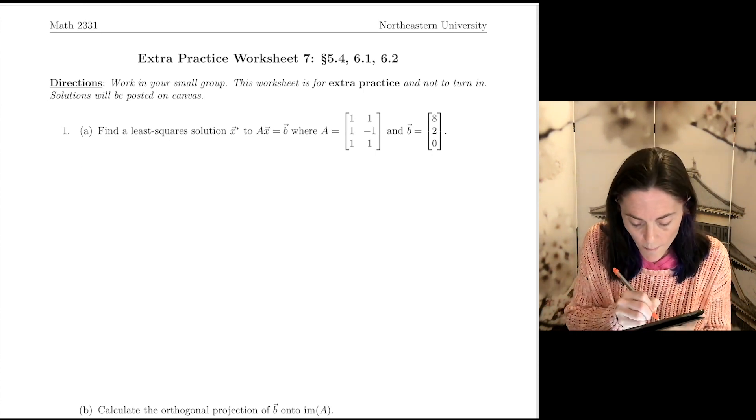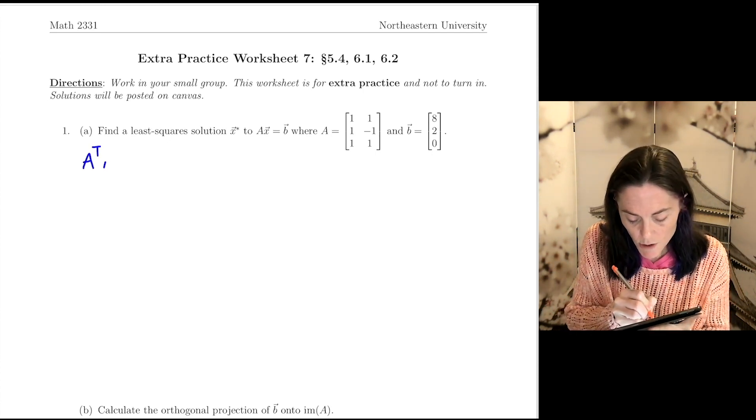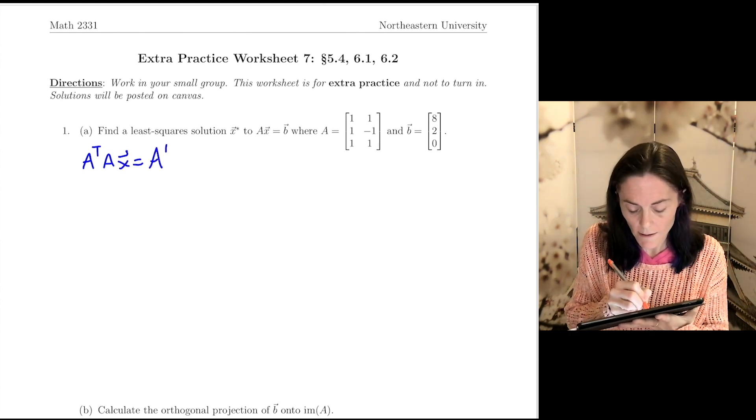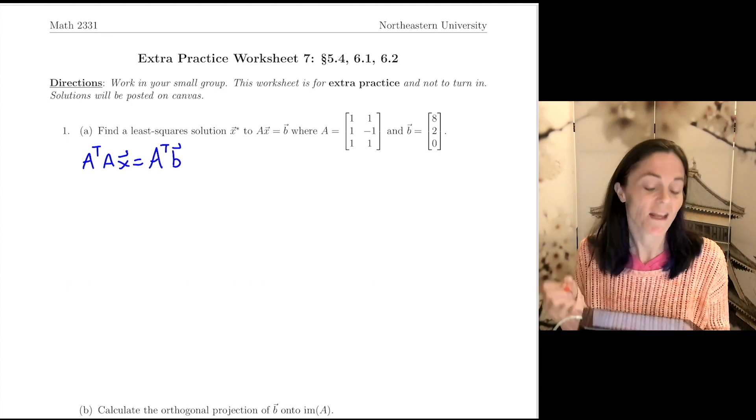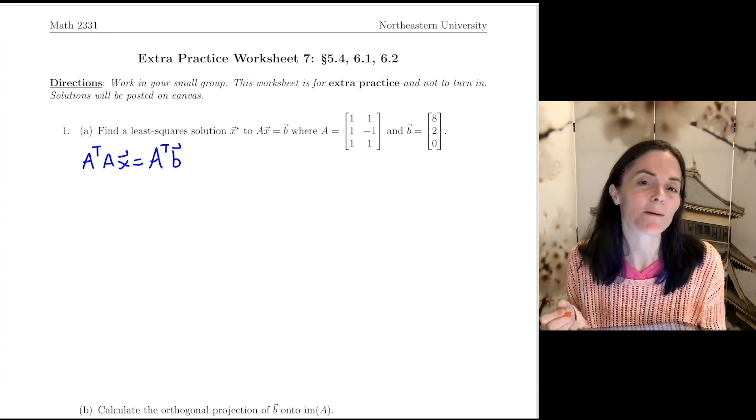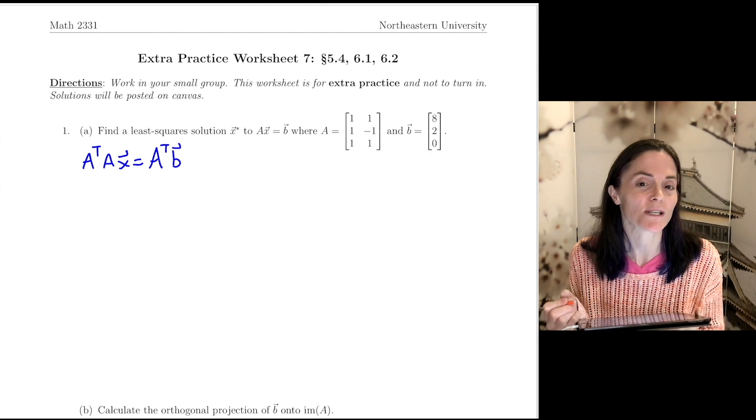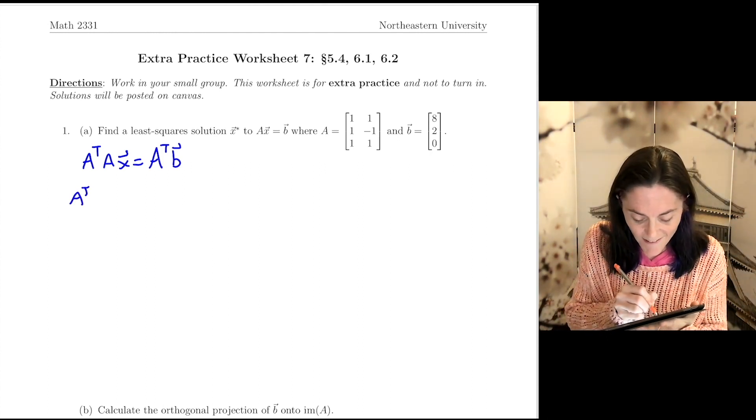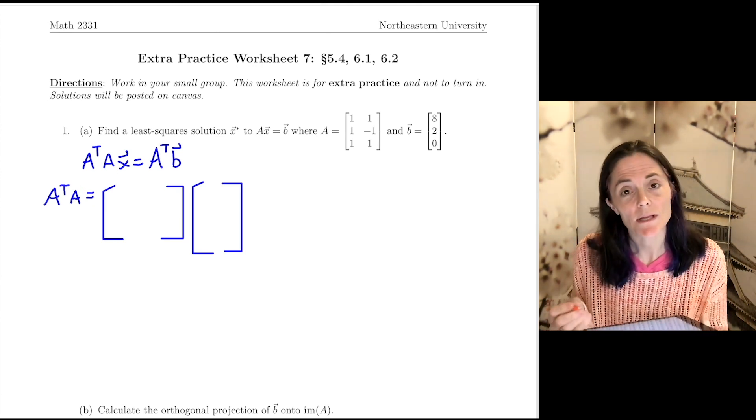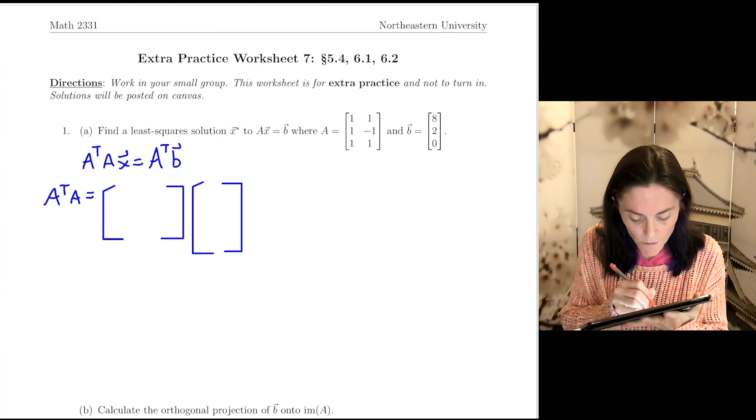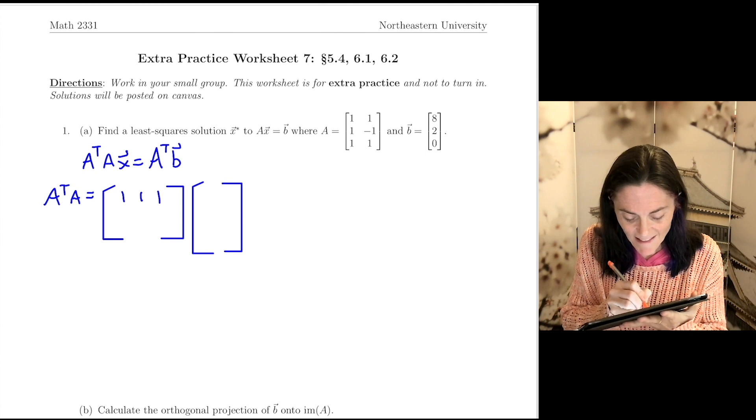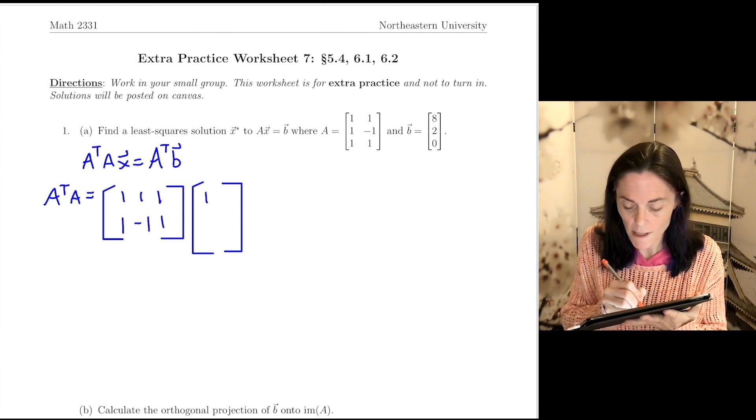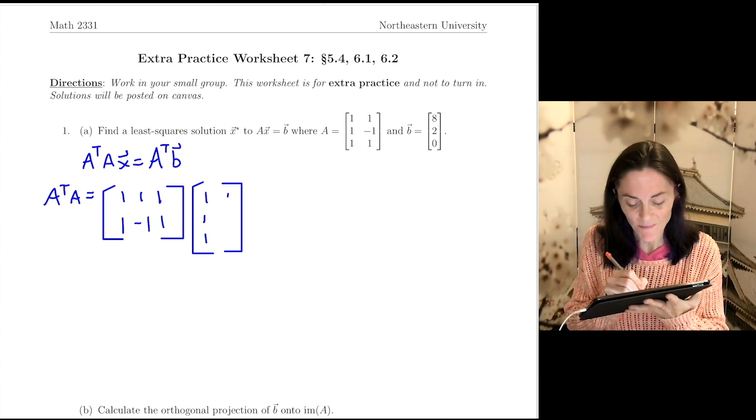What we want here is the normal equation, which is A transpose A times X equals A transpose B. We know that the solutions to this will be our least squares solutions. So let's calculate here A transpose A. When we transpose A, the first column becomes the first row, and then the second column becomes the second row, and then I'll recopy matrix A.